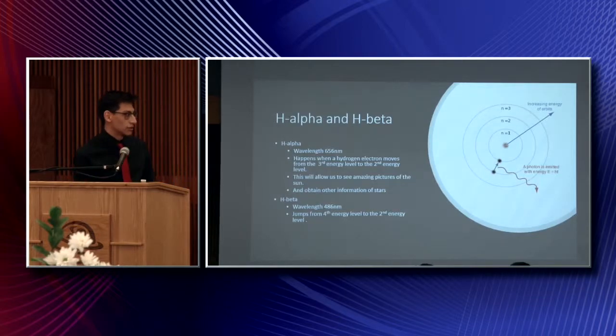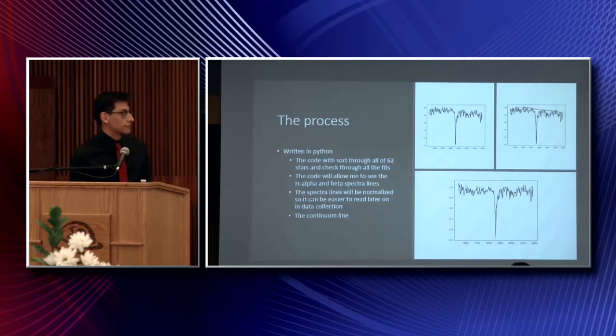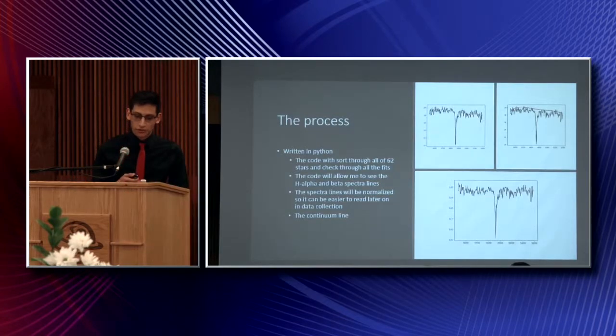So all the code is written by Jonathan Barnes, and this code sifted through all of the stars and gave us the H-alpha and H-beta spectrum lines.